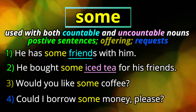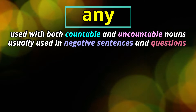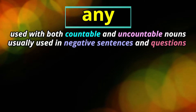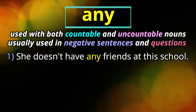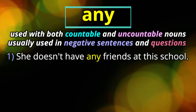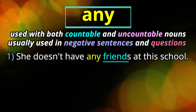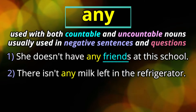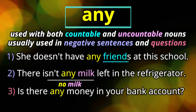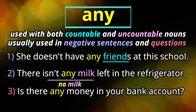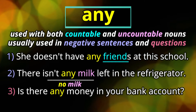Let's do the final quantifier, which is any. Any is used with both countable and uncountable nouns, and it's usually used in negative sentences and questions. In the first sentence: she doesn't have any friends at this school — this is a negative, and friend is a countable noun. In example two: there isn't any milk left in the refrigerator — another negative, and milk is uncountable. In example three we have a question: is there any money in your bank account? This is a neutral question — the person is just asking if there is any. And that's how any is used.